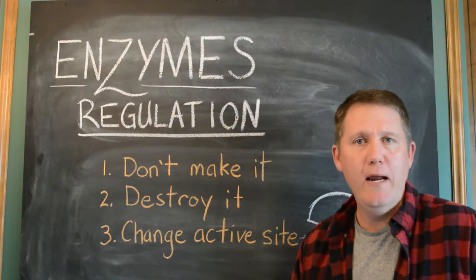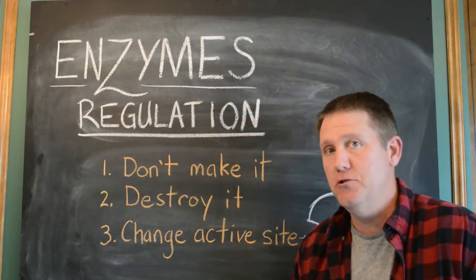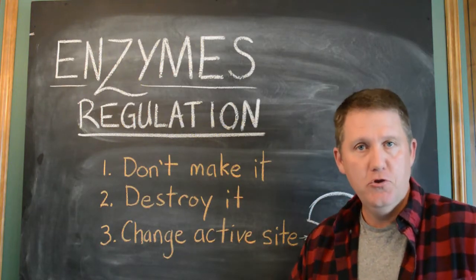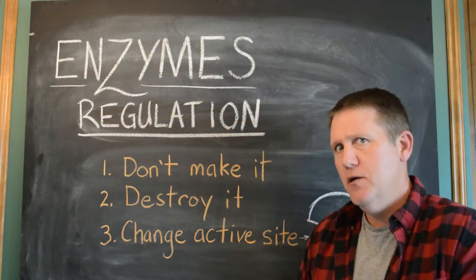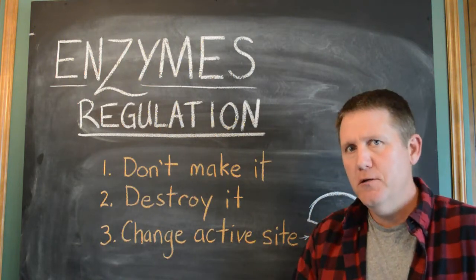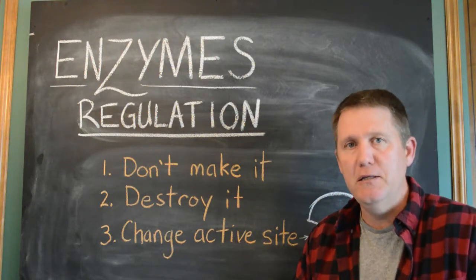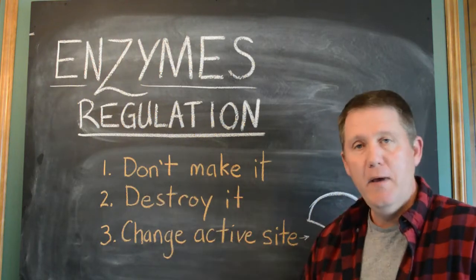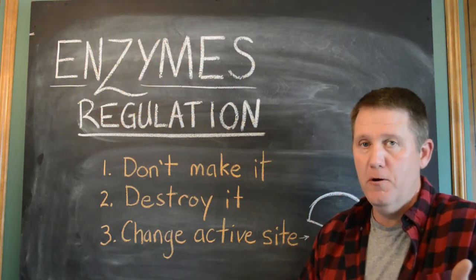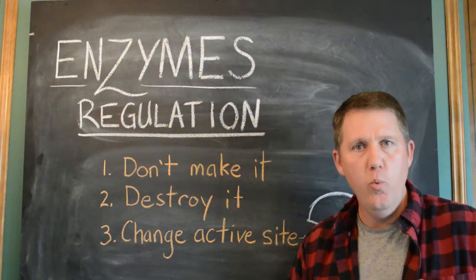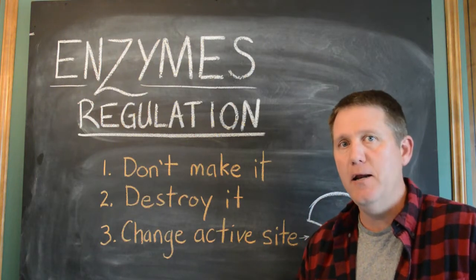There are a few ways that we could regulate enzymes. The first one, probably the most obvious: just don't make it at all. This is part of the differentiation of our cells. Why is a liver cell different than a heart cell? Probably because it makes different enzymes — it expresses different genes. We don't make enzymes that we're not going to use. That's part of how we control where certain chemical reactions are going to occur in the body.